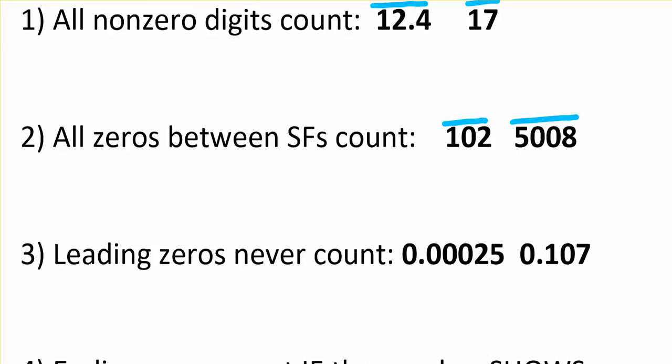Leading zeroes never count. So on this number, only these two are significant. It doesn't matter where the decimal place is. All of these are leading zeros and they don't count. On this one, the sandwich one counts, so I have three that are significant there.